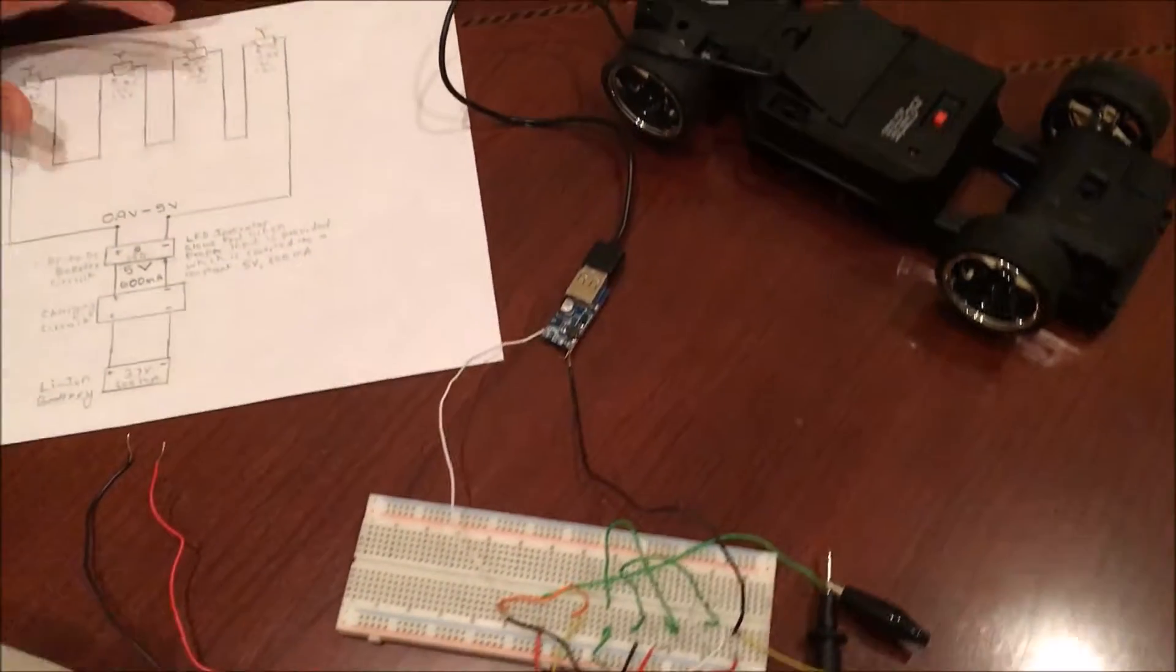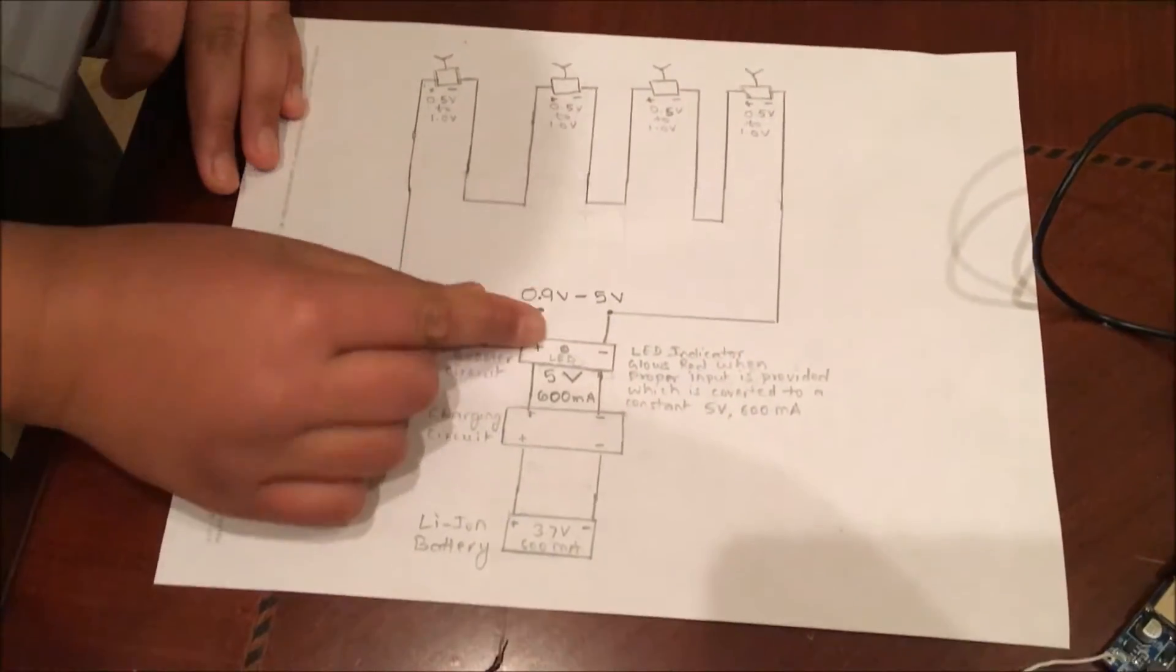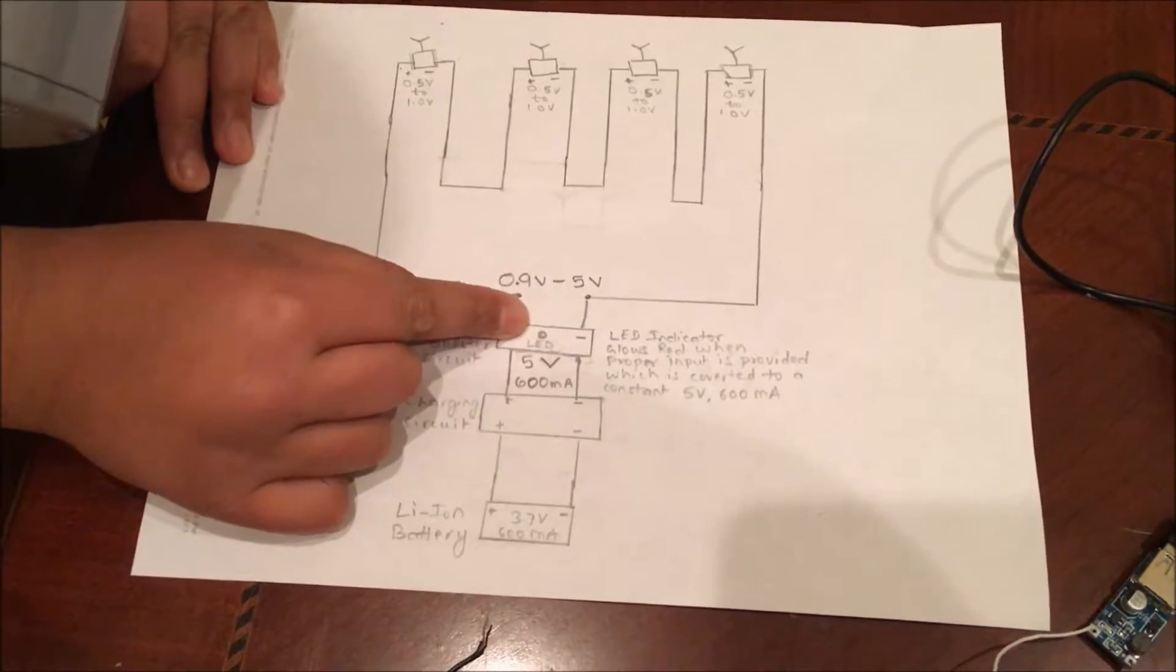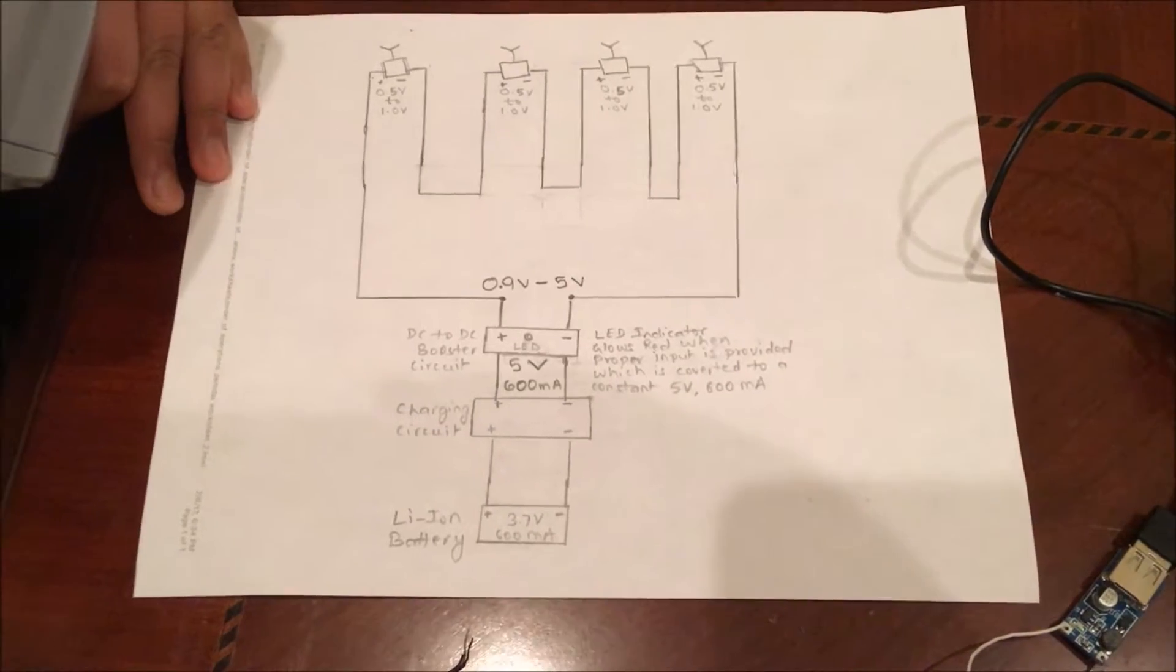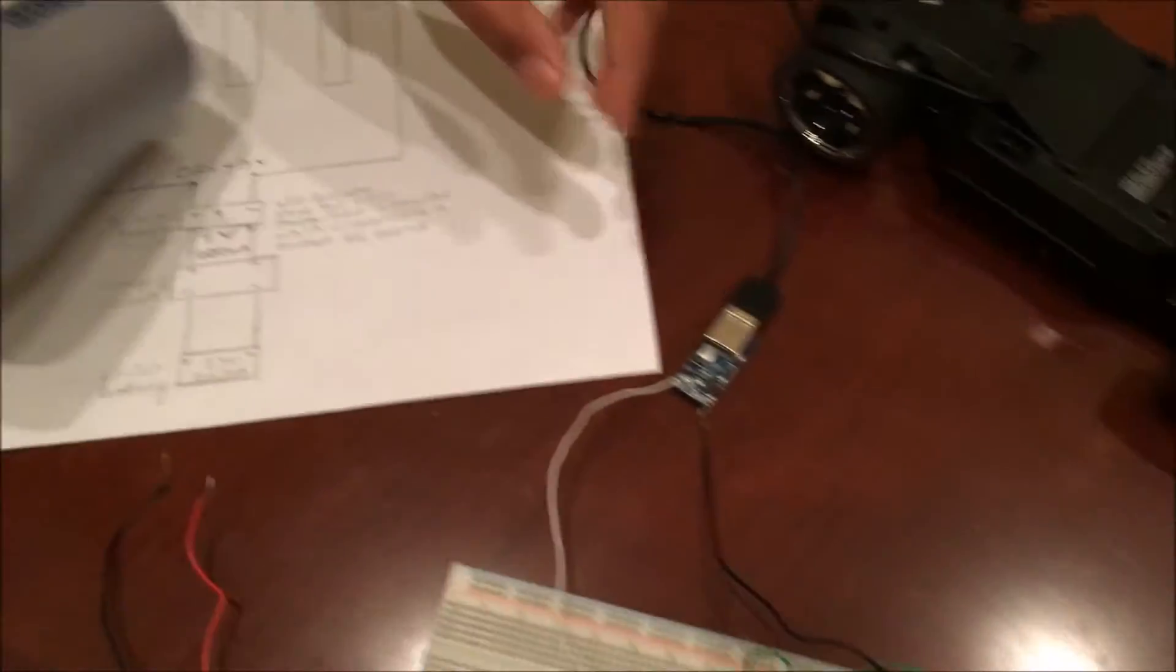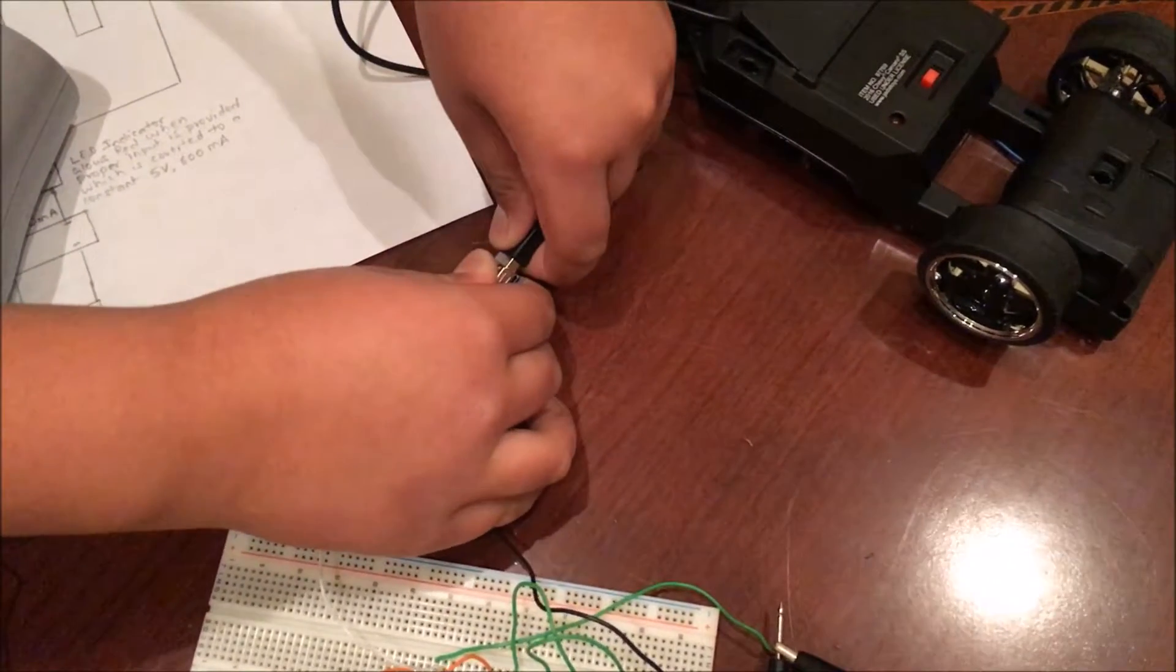Now that we have our prototype set up, we have to test it. So according to the circuit diagram, the LED light should be glowing on the boost converter when the right amount of voltage is generated. So for that, we have to disconnect the USB from the car.